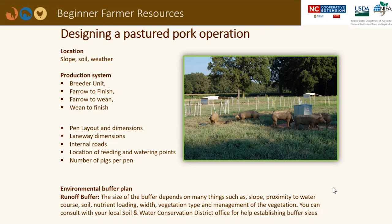The size of the buffer depends on many things such as slope, how close you are to a water course, soils, nutrient loading, the width of that buffer, and the vegetation type and management of the vegetation. Generally speaking, a buffer needs to be a strip of vegetation between 20 and 165 feet between your fields and the water courses.